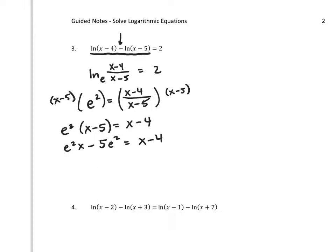What are we solving for? I'm trying to solve for x. I've got x on both sides of the equal sign. Let's get the terms involving x on the same side. That's e^2 times x. So subtract x, and then let's add this 5e^2.